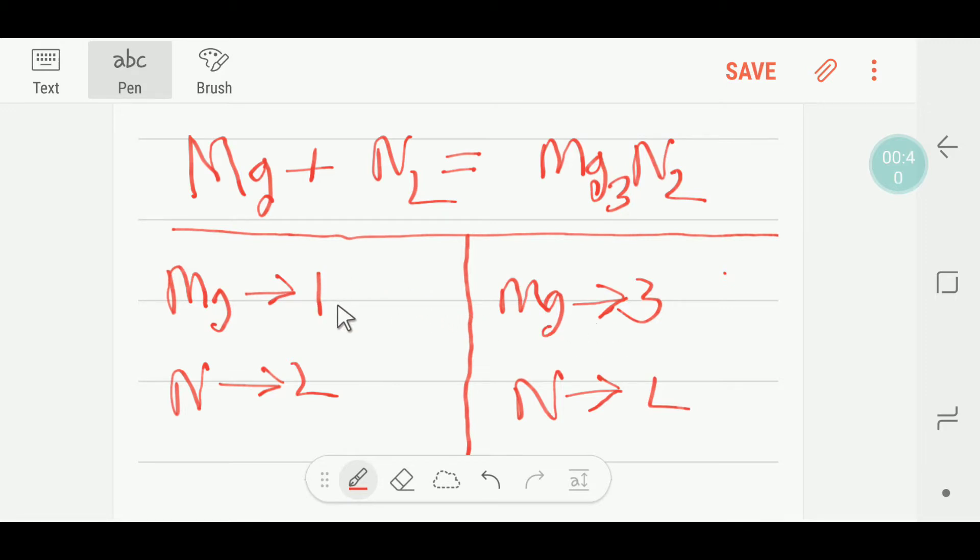I can multiply here by three, right. Then I will draw three magnesium. If I put here three, then this three will come before this magnesium, that is here.